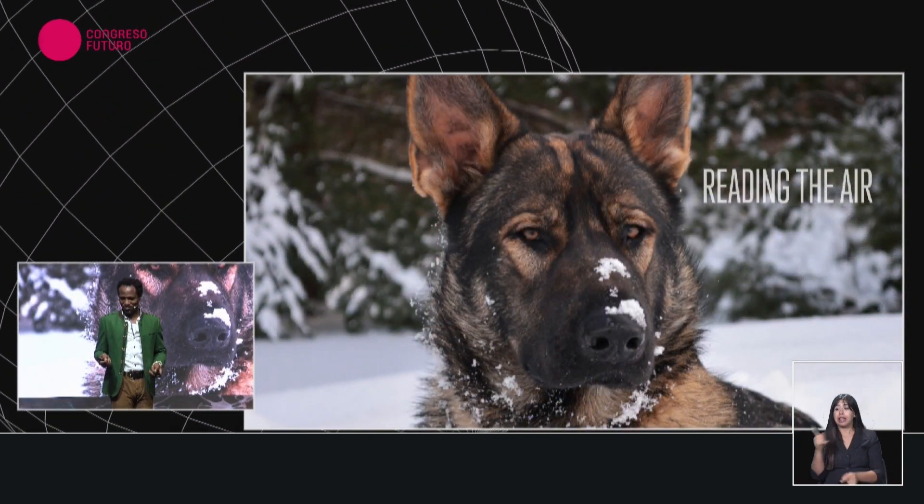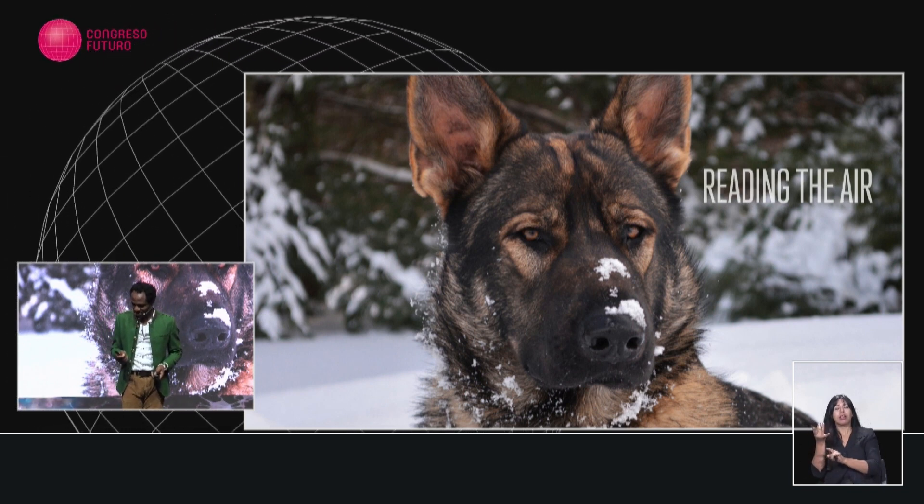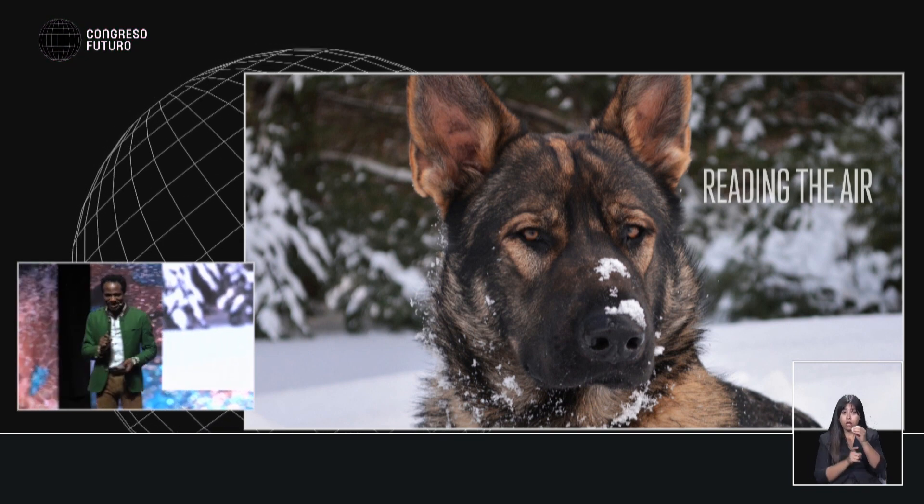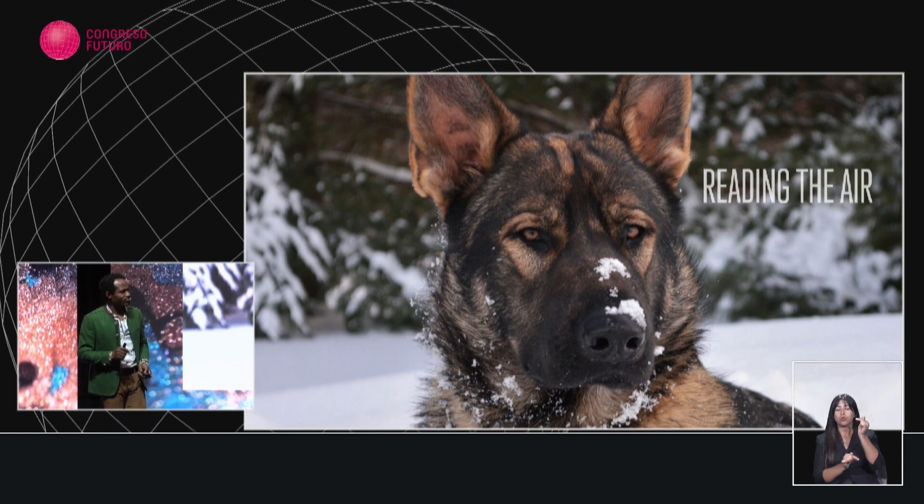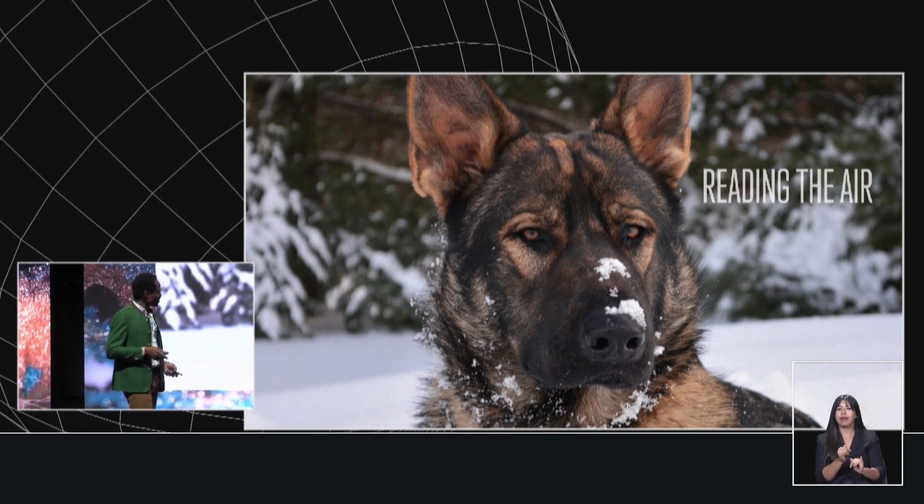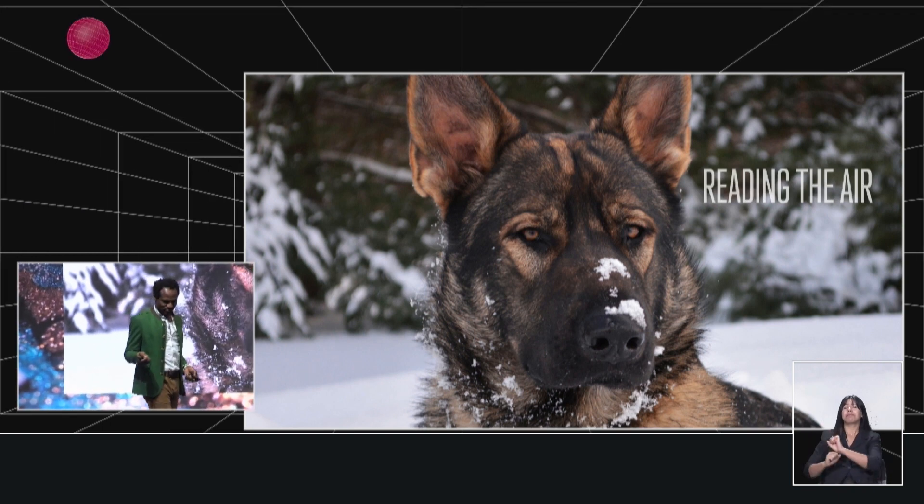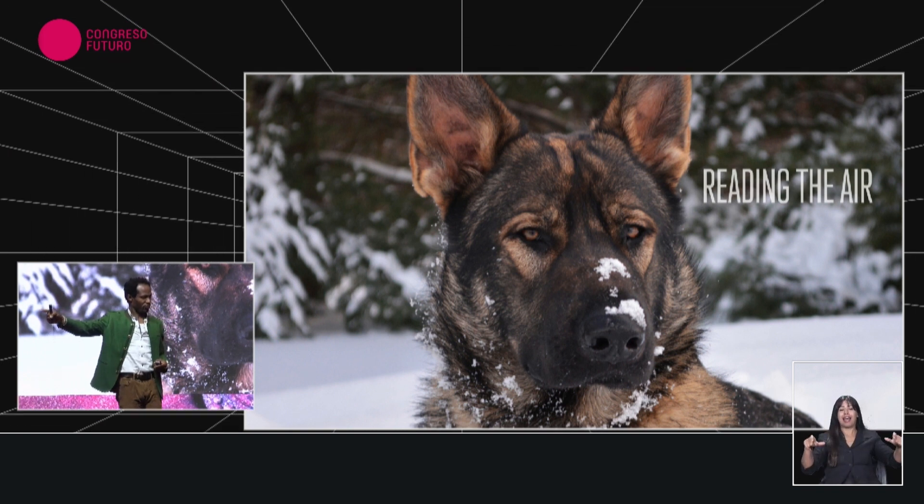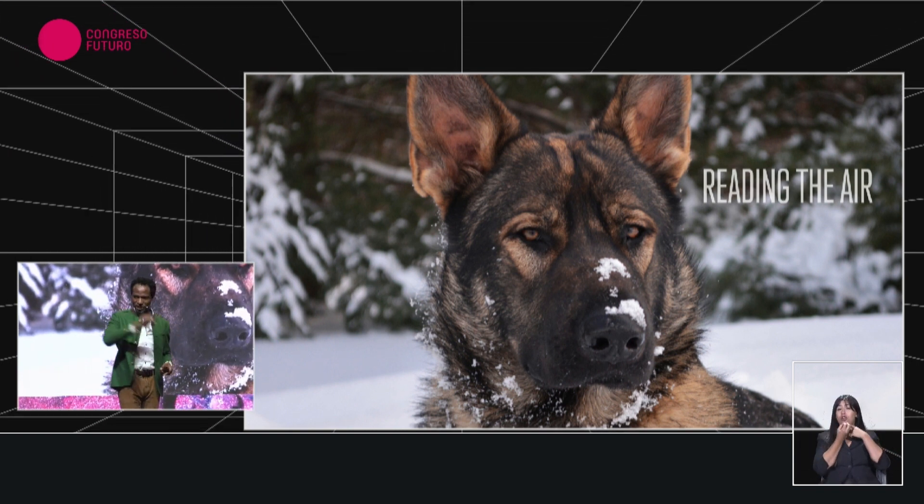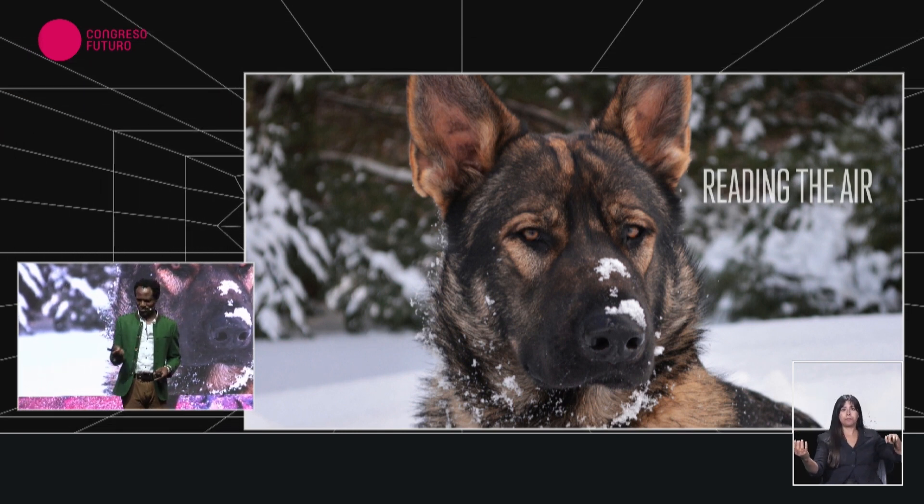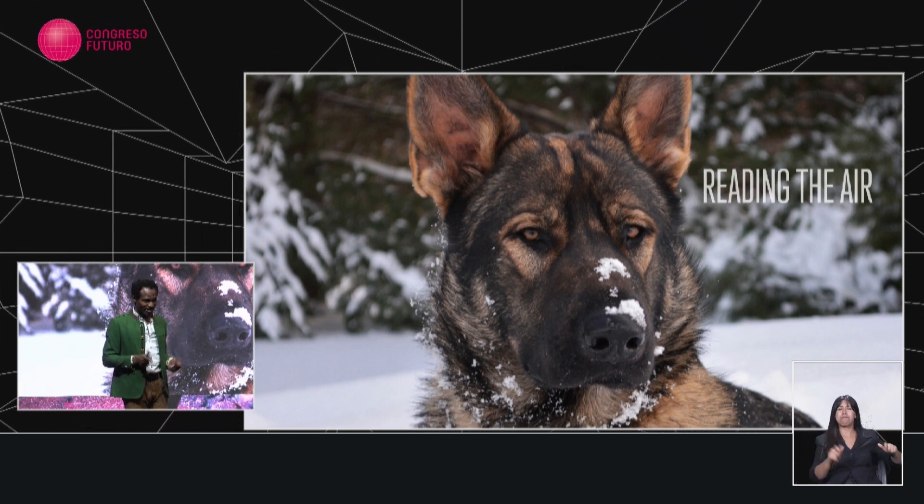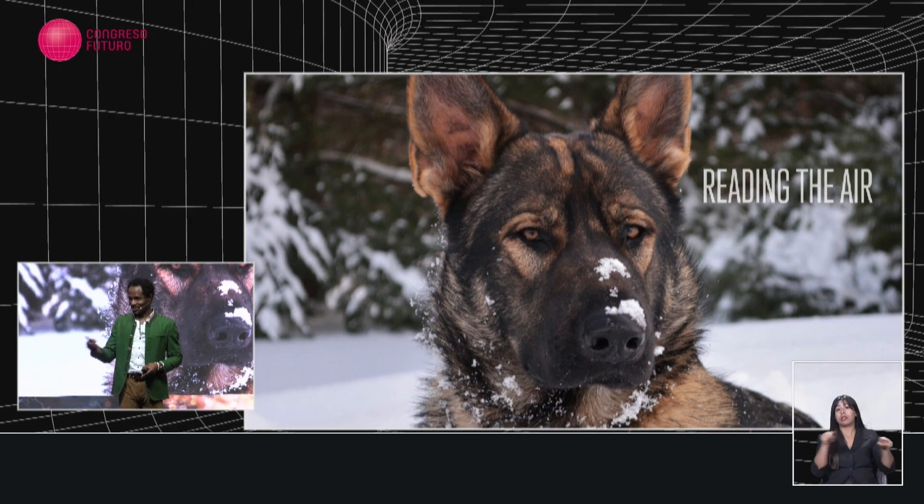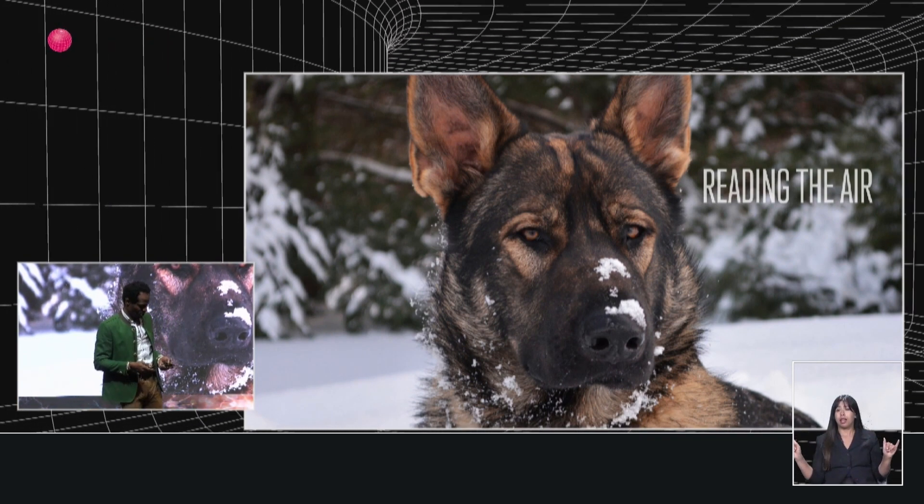However, smell is a problem that biology, evolution has spent the last 600 million years perfecting. You see the humble dog you're looking at on the screen? Anecdotally, this dog, if you have a football field and you put a rose on one corner and you have the dog on the other side, it will tell you that there is a rose on the other side. That's how good the sense of smell is. In fact, if you own a dog and you leave a room and the dog comes into that room, it can tell that you were in that room.